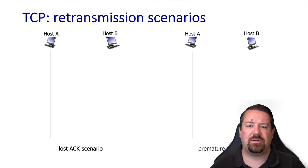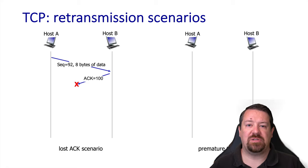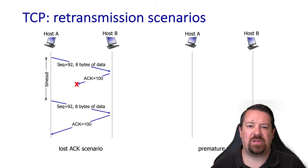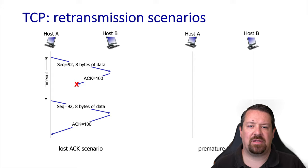Now for some time sequence diagrams. First, we'll look at the lost ACK scenario. Host A sends 8 bytes of data with sequence number 92. Host B will be expecting byte 100 in the next packet — taking sequence number 92 and adding 8 bytes — and so that's the acknowledgement sent back. However, this acknowledgement is lost. Host A waits for its timeout value and then resends the packet, identical to the first time with the same sequence number and same data. Host B already had this packet, so it discards the duplicate but resends the acknowledgement. This time the acknowledgement arrives at Host A, which is able to cancel its timer.